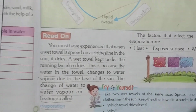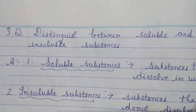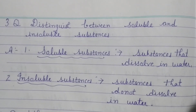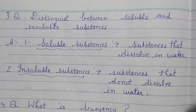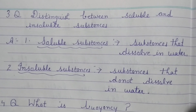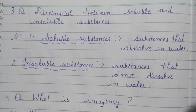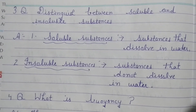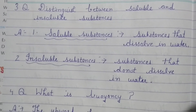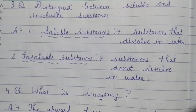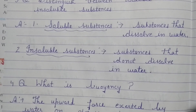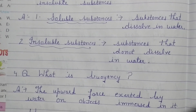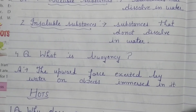Question number 3: Distinguish between soluble and insoluble substances. Number 1 — Soluble substances: substances that dissolve in water. For example, sugar and salt. Number 2 — Insoluble substances: substances that do not dissolve in water. For example, oil and petrol.